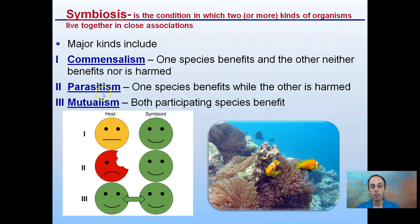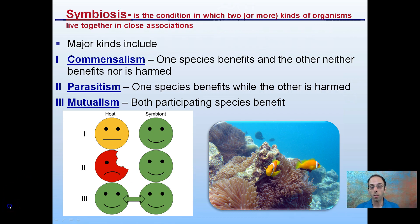Then we have parasitism, where one species benefits while the other is harmed. And mutualism, where both participating species have a benefit — that's the third type of symbiosis. This can occur in aquatic environments as well as terrestrial ones, so we want to be mindful that this is occurring not just on land.